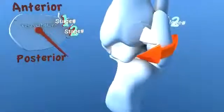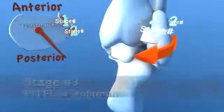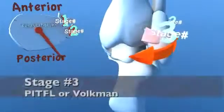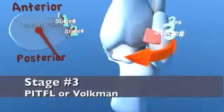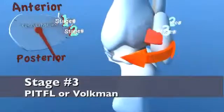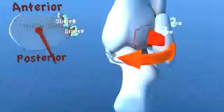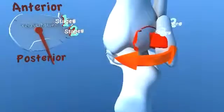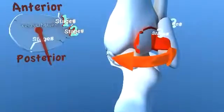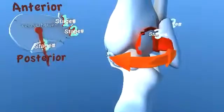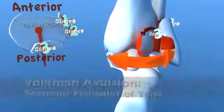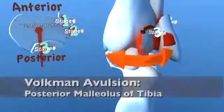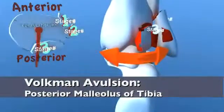As the force progresses, a stage 3 injury will either involve a rupture of the posterior tibial fibular ligament or a fracture of the posterior malleolus of the tibia, also known as Volkmann's fracture.